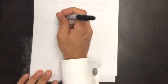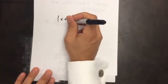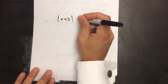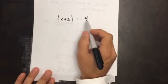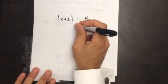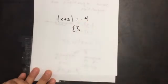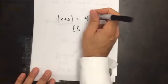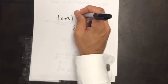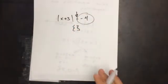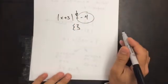The special cases are when the absolute value equals something it cannot equal. If it says the absolute value of x plus three equals negative four, there's nothing that's negative four units away from zero. So this is an empty set — there's no solution whenever the absolute value equals a negative number.